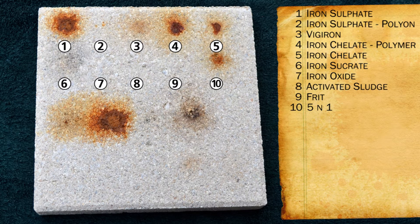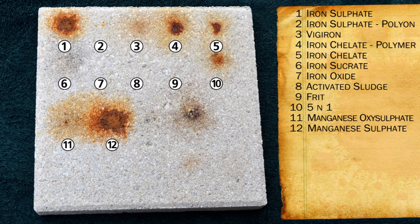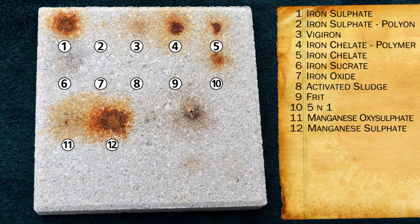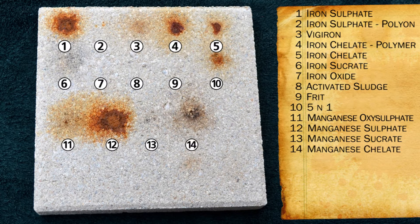Moving down to the manganese row: manganese oxysulfate and manganese sulfate produce a very similar response. The sulfate forms — even oxysulfate, which is a blend of oxide and sulfate — still produce a stain, as seen in number 11. Number 12 looks very similar to the iron sulfate stain. So sulfate is a big no-no if you're trying to avoid staining. Number 13, the sucrate, produces very little staining but also very little agronomic availability. Number 14, manganese chelate, shows a little bit of staining — so even though it is more available to the plant, it will still produce a stain.